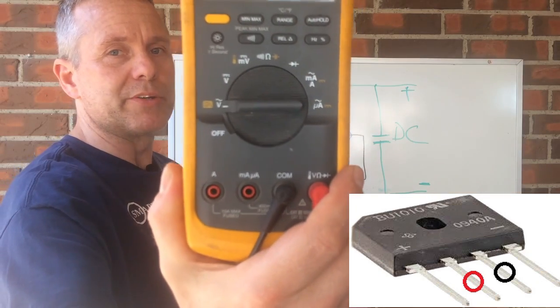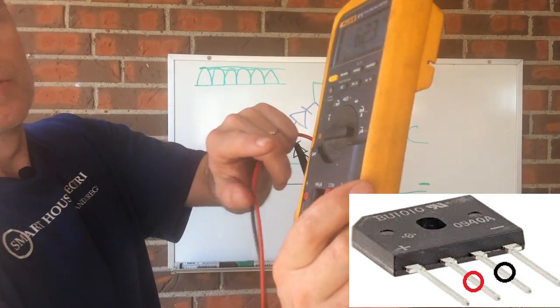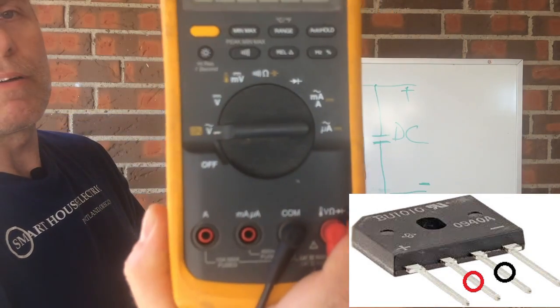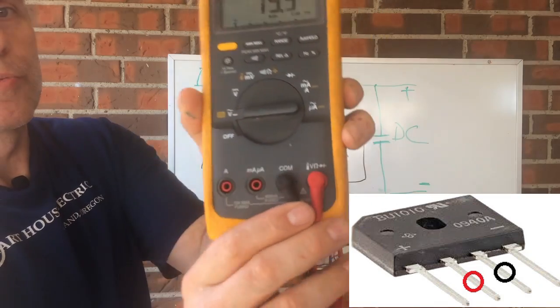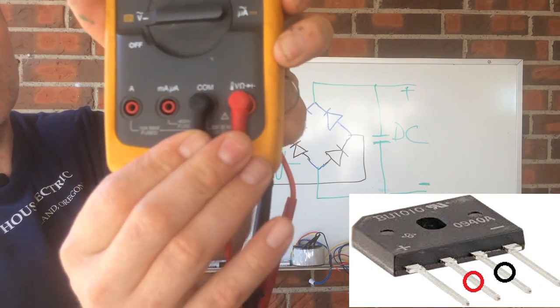Like, here's a Fluke meter. You'll put it into this mode right here, alternating current volts. And then you'll put it into the regular slots just like this.